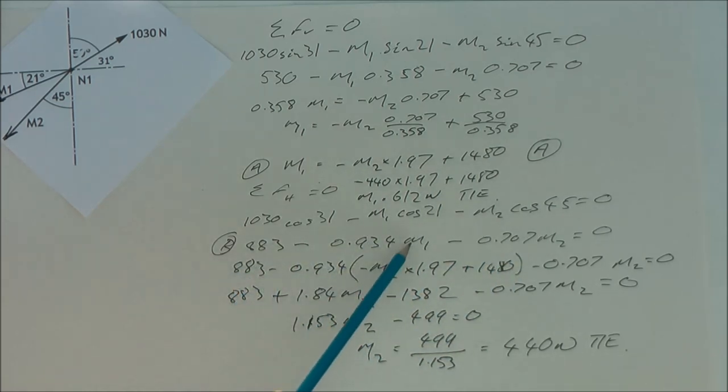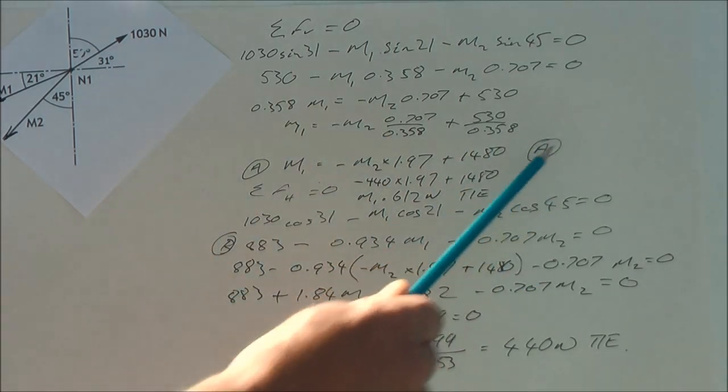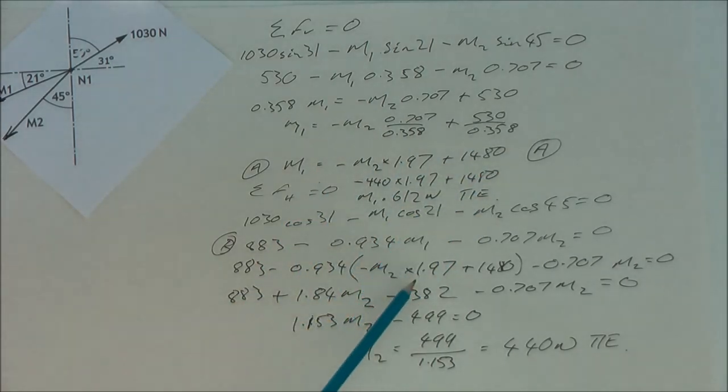Now in this line I've got M1 and I've got M2. So I take equation A, this part here, and I drop it in. So I've got 0.934 times minus M2 times 1.97 times 1480. Next stage, I've burst that bracket.